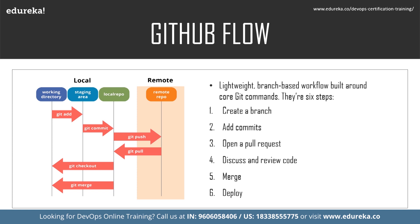The second step is add commits — snapshots of development efforts within a branch create safe, revertible points in the project's history. The third step is open a pull request — pull requests publicize a project's ongoing efforts and set the tone for a transparent development process. The fourth step is discuss and review code — teams participate in code reviews by commenting, testing, and reviewing open pull requests. Code review is at the core of an open and participatory culture.